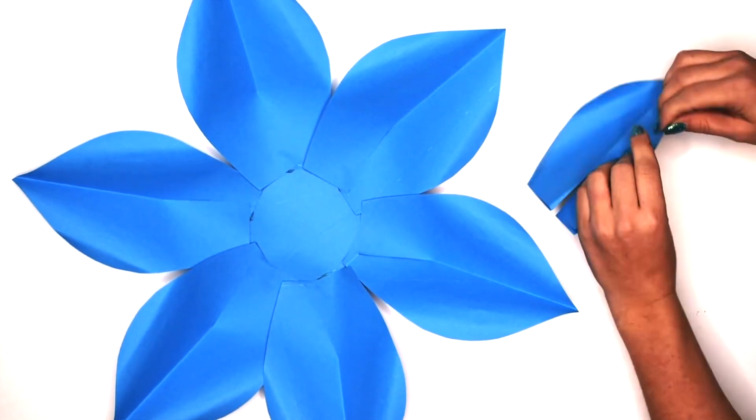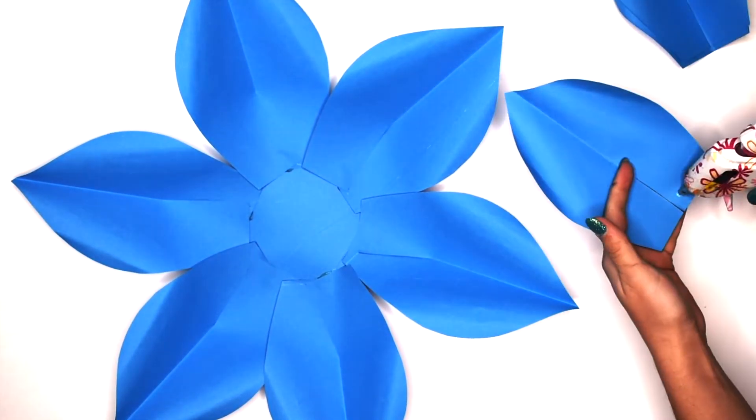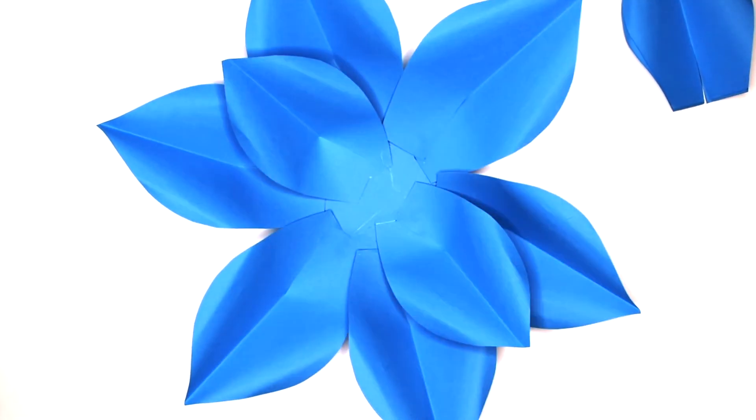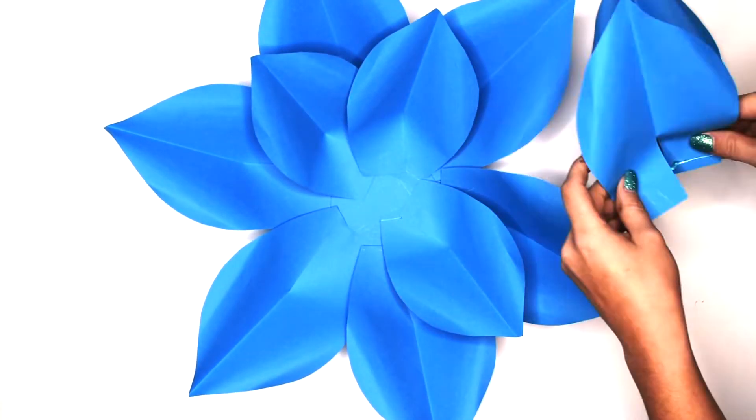Since our outer layer is now complete we're going to work on the middle layer. You're going to do the exact same steps we showed you before to prep your petals. Once they are ready you're going to glue it in between the outer layer petals so that they're not overlapping.